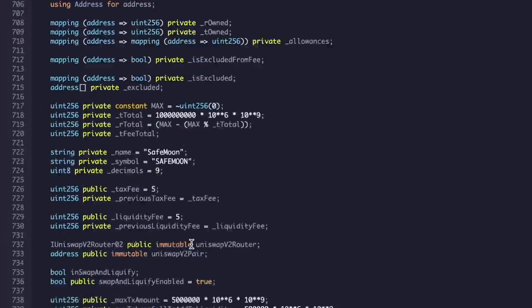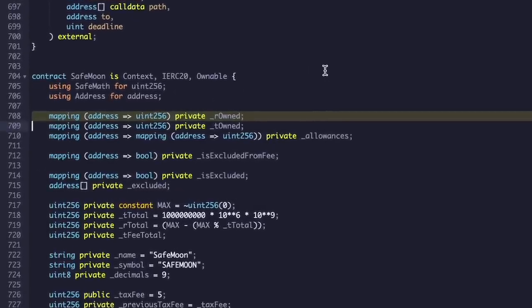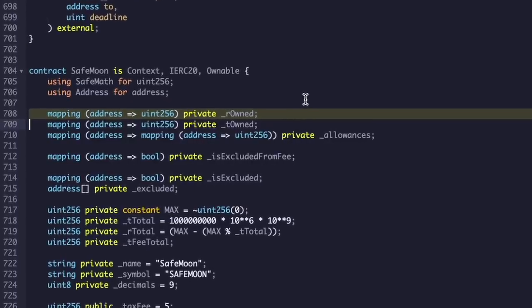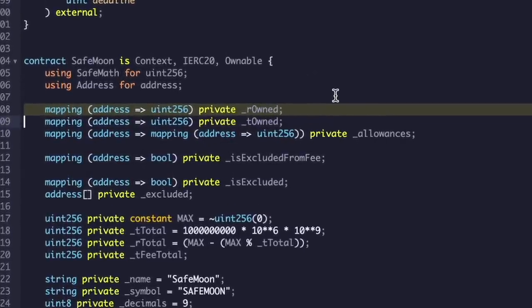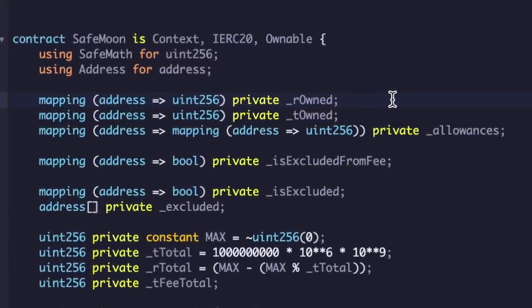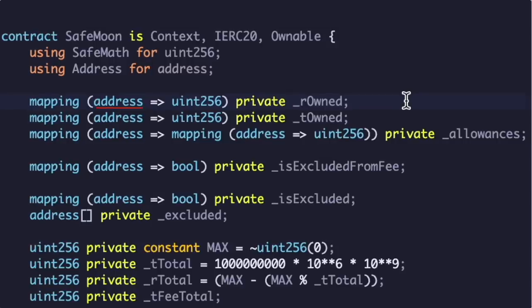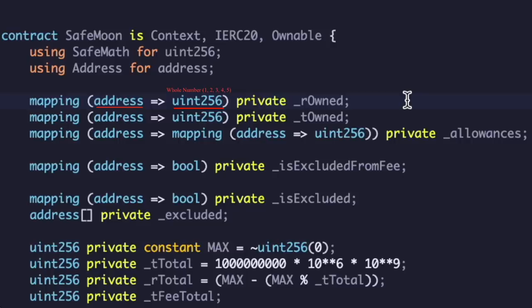Instead of going over these functions again, I want to take everyone's attention over to this line of code. This variable called r_owned is what the balance of function calls on whenever a wallet or an exchange asks the blockchain how many SafeMoon you own. Your SafeMoon only live inside this variable. Your SafeMoon do not exist on a wallet, they don't exist on an exchange, they don't exist anywhere else. This variable is typed as a mapping between addresses and whole numbers. The address is your public key, your receiving address. The number that your address is mapped to is the number of SafeMoon that you have been sent from other addresses.